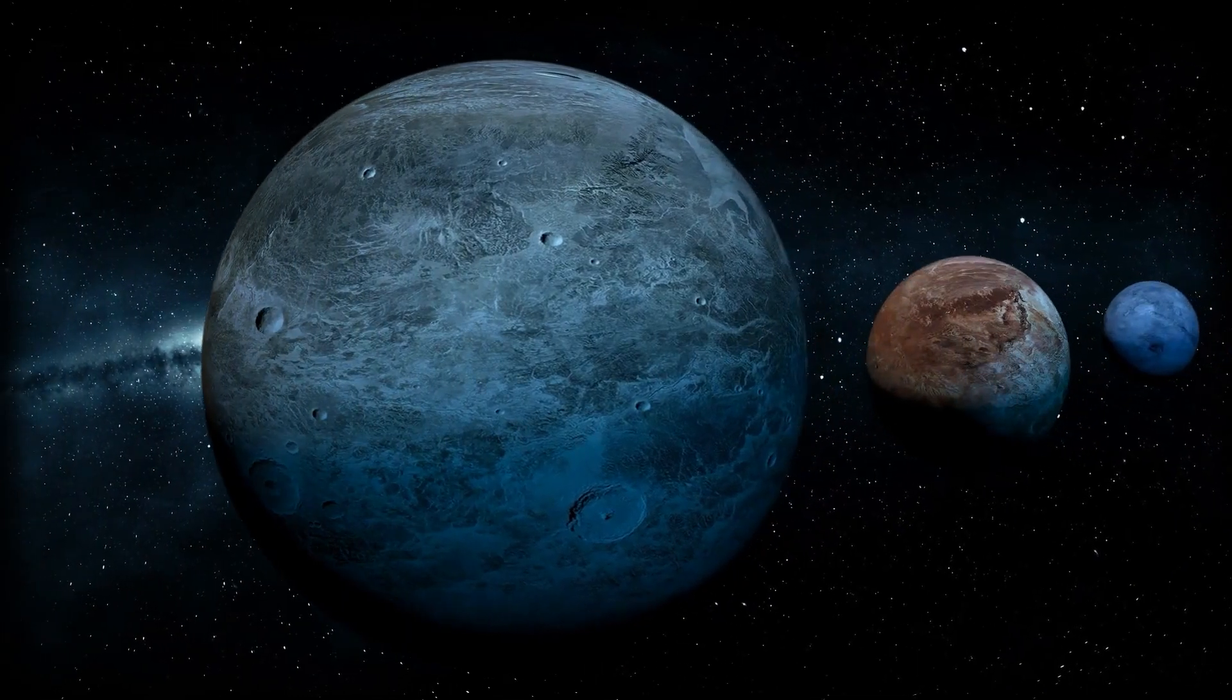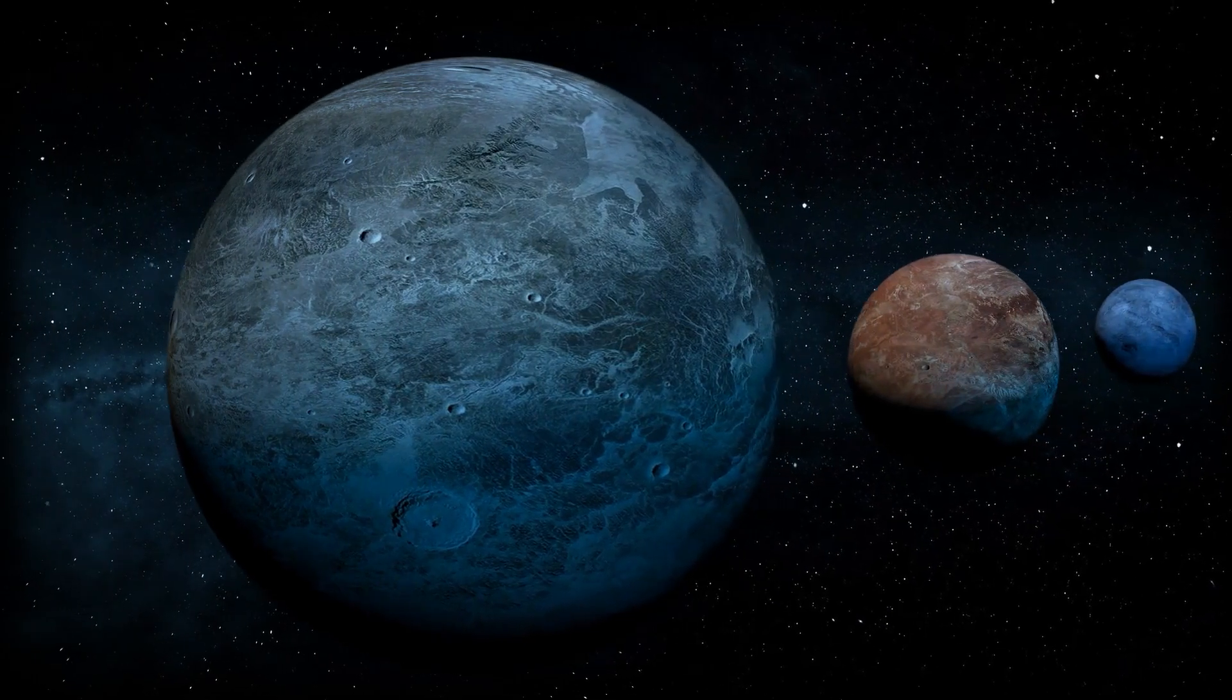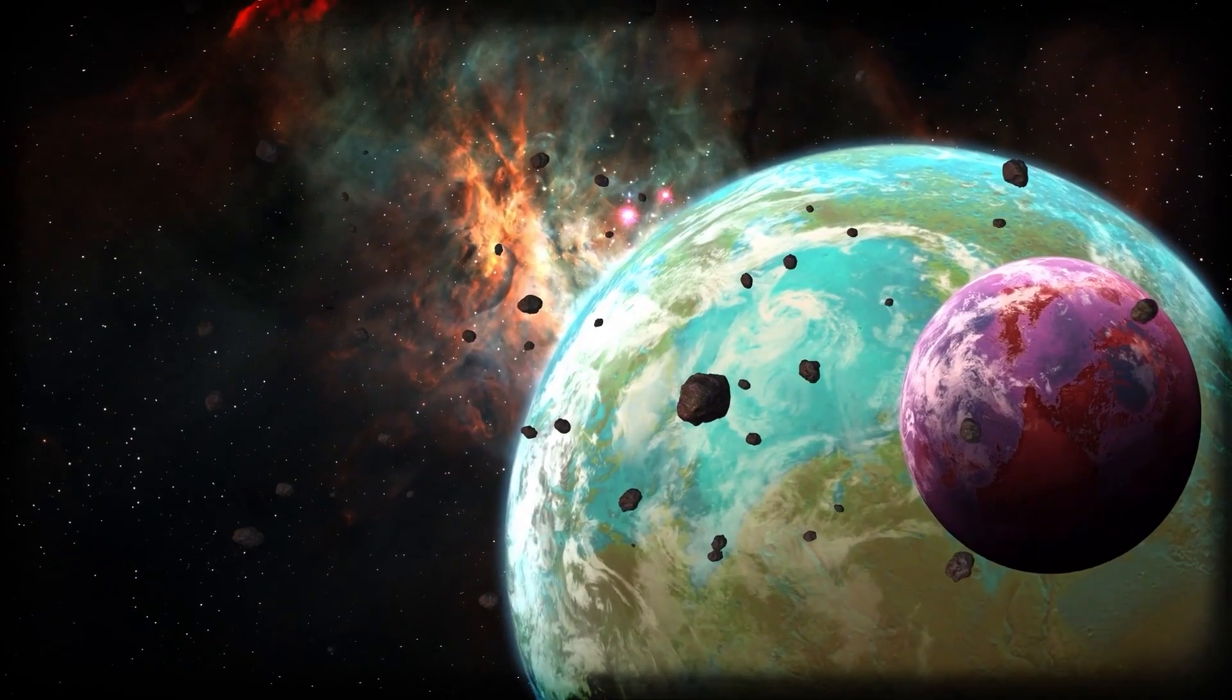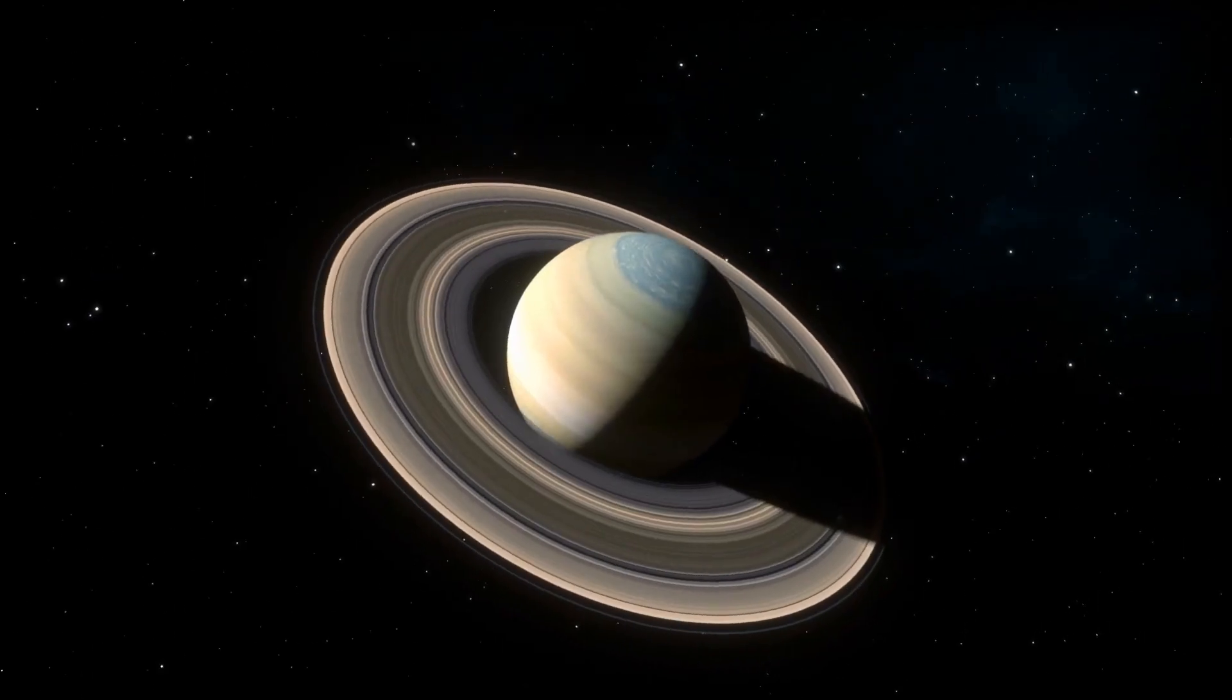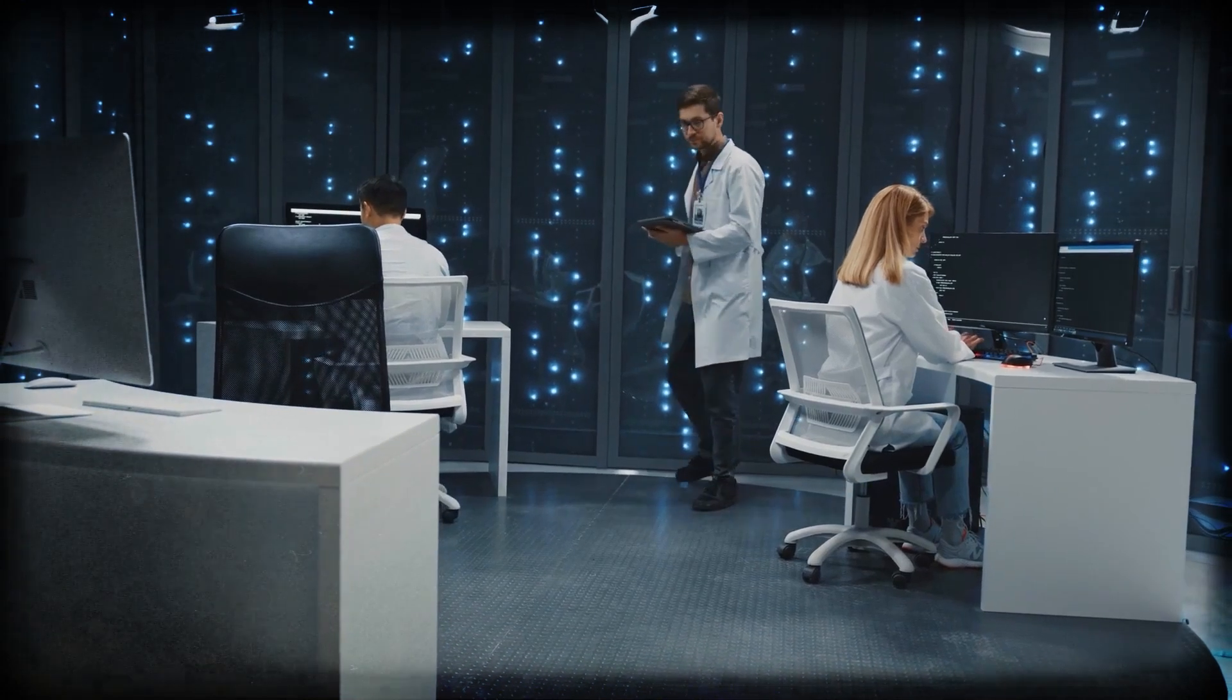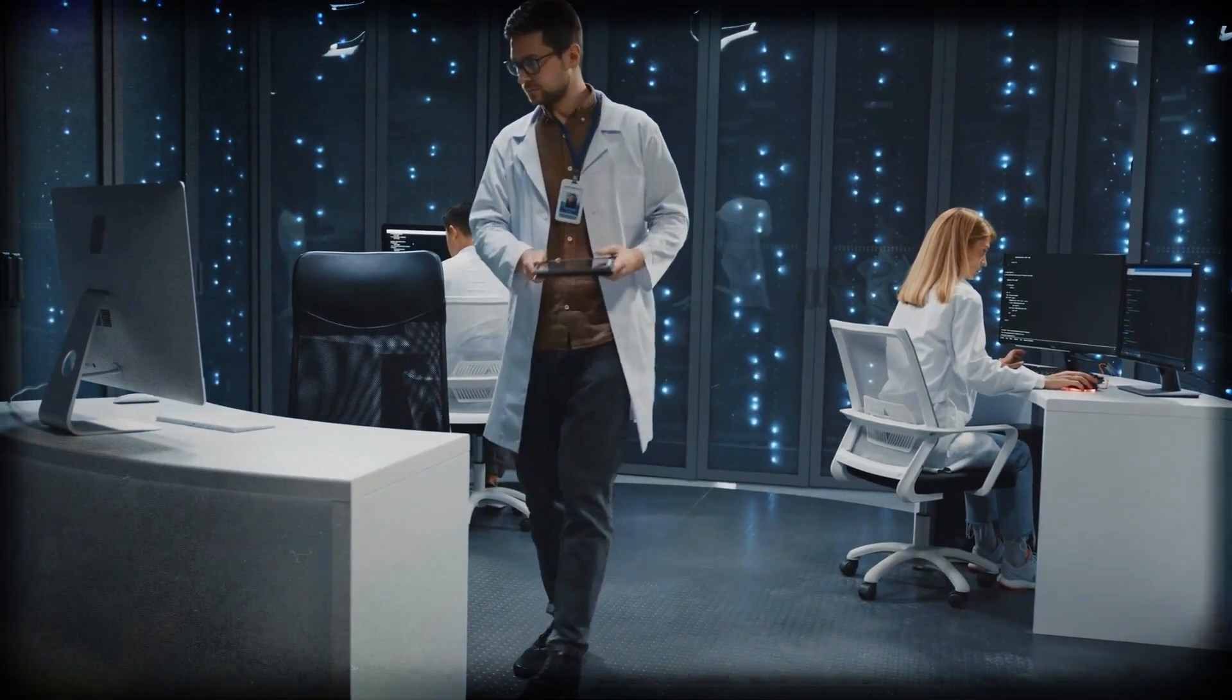It managed to spot rocky planets about the size of Earth, orbiting at just the right distance from their stars. Not too hot, not too cold. This region is called the Habitable Zone, or sometimes the Goldilocks Zone, because the conditions there could be just right for liquid water, a key ingredient for life as we know it.